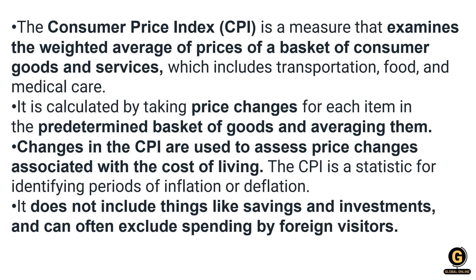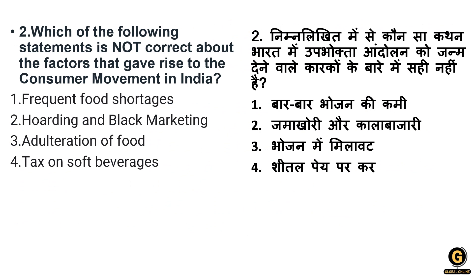Explanation: The Consumer Price Index (CPI) measures the weighted average price of a basket of consumer goods and services including transportation, food, and medical care. It is calculated by taking price changes for each item in the predetermined basket and averaging them. Changes in CPI are used to assess price changes associated with cost of living. CPI does not include savings, investment, or spending by foreign visitors.